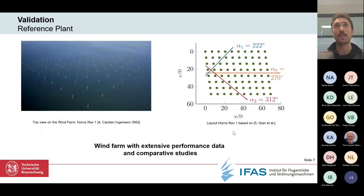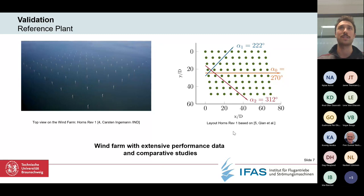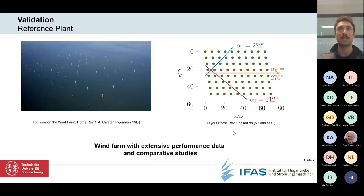Now that the tool is built, validation needs to be done. The reference plant used is Hornsrev 1 — as you can see, a top view of the plant on the left side and the schematic layout with turbine positions and main wind directions on the right. This wind farm has extensive performance data and comparative studies available to the public, making it a good choice for validation.